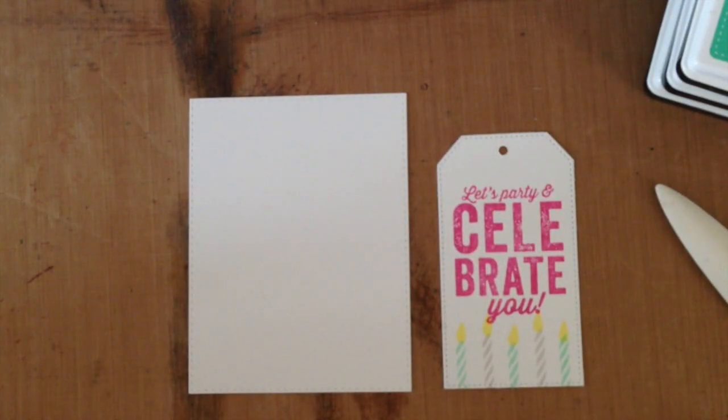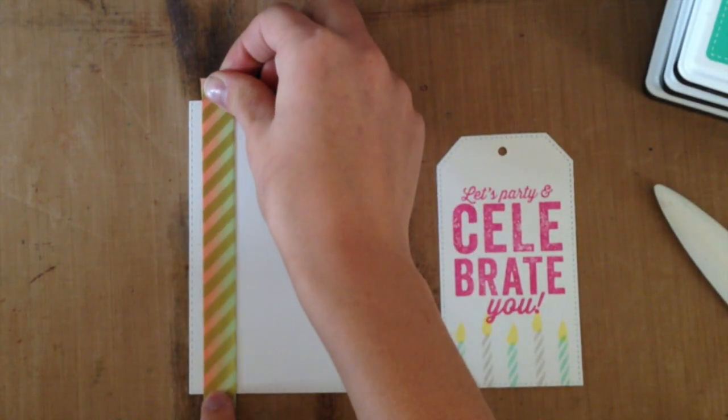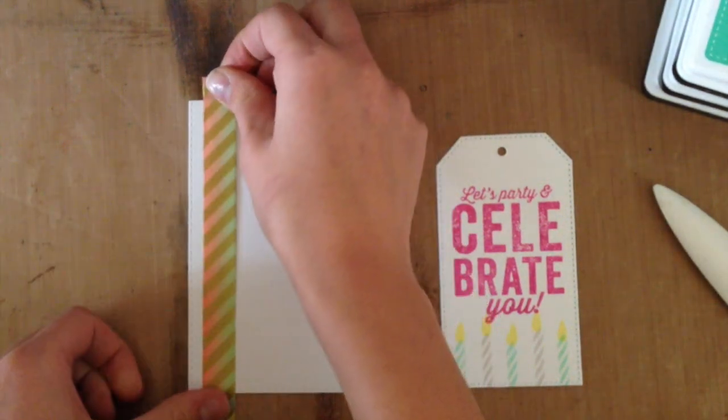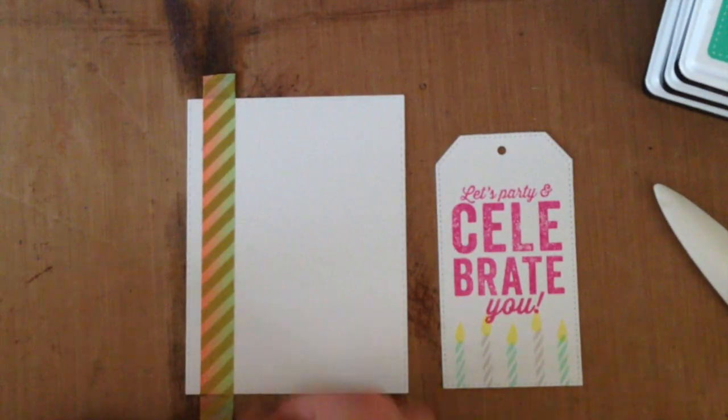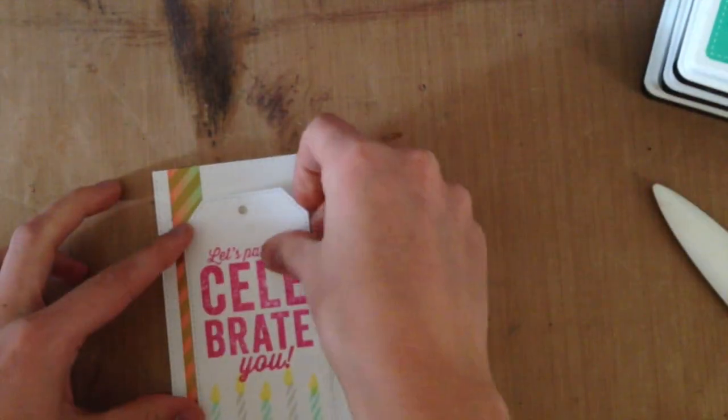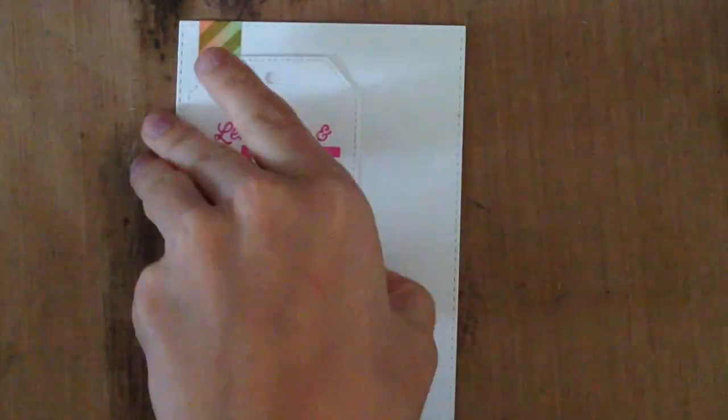Now it's time to decorate the actual card itself. I took that card panel that we created that we had die-cut earlier and I put a piece of washi tape on there. This is the gold ombre washi tape from Pinkfresh Studios, and if you had ordered the April kit from Simon Says Stamp this month you would have that in your kit as well.